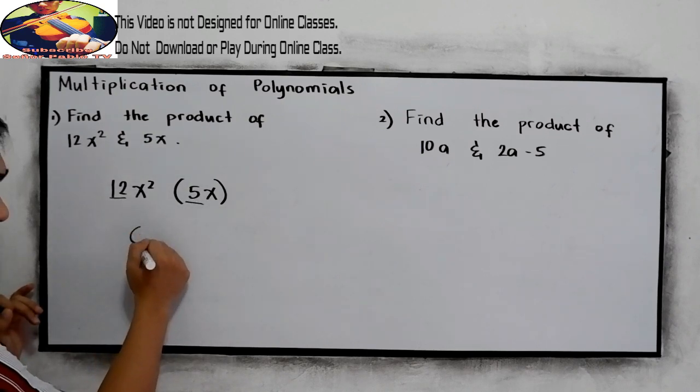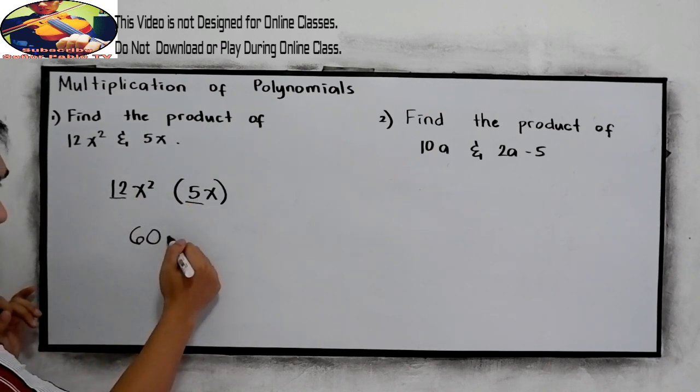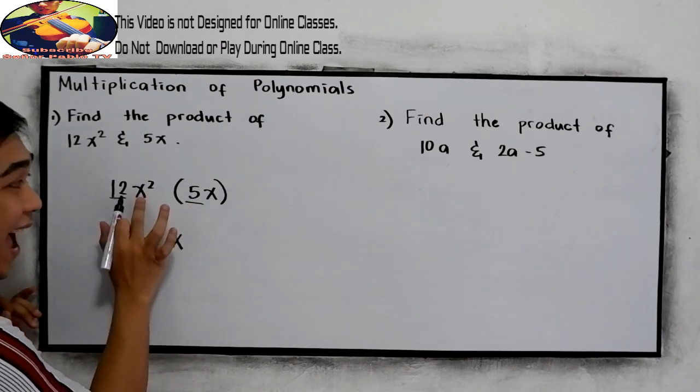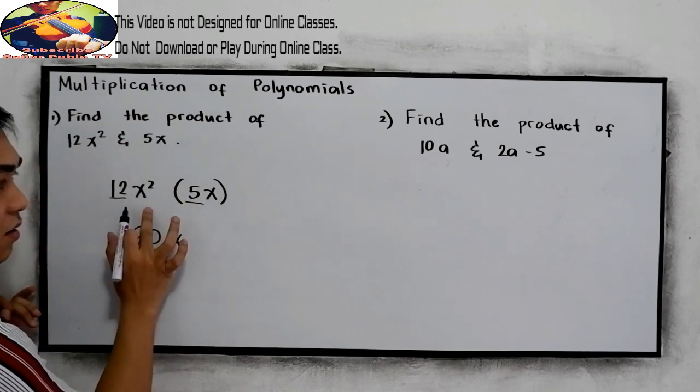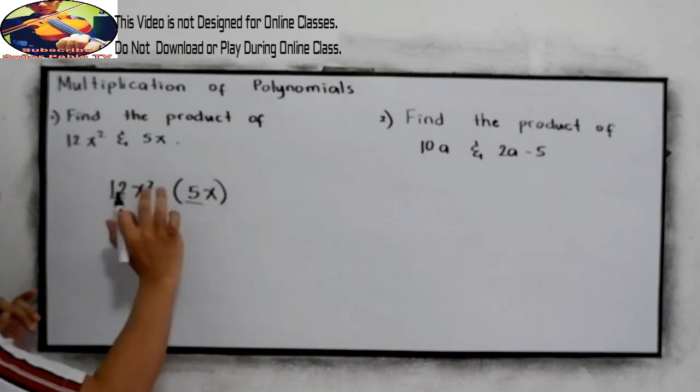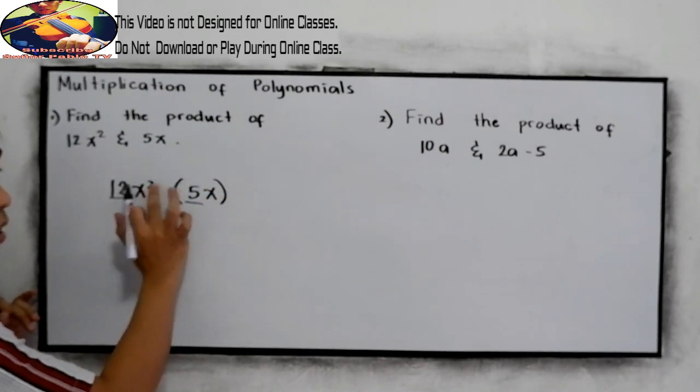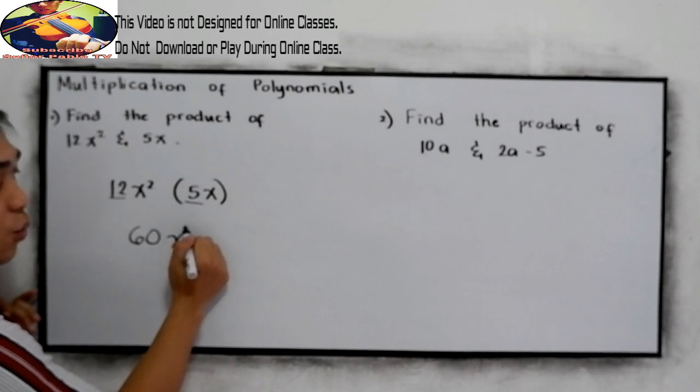12 times 5, that is 60. And for our variable, copy the variable, because they have the same base. Laws of exponent, add the degree or the exponent. So 2 plus 1 here, so we have 3.